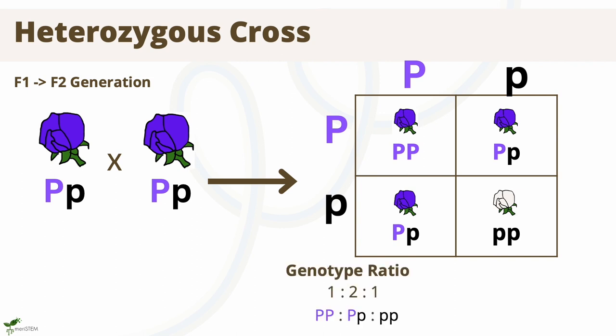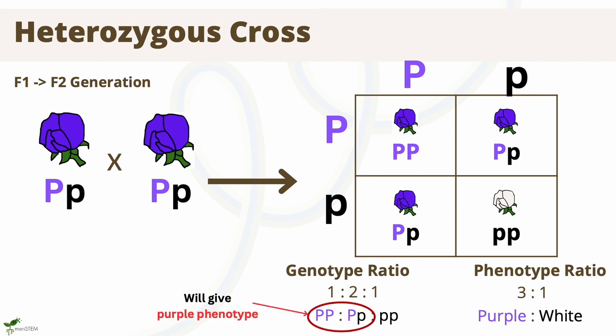In this example, the possible genotypes include 1 big P big P, 2 big P little p, and 1 little p little p, which results in a genotype ratio of 1 to 2 to 1. However, the predicted phenotype ratio is 3 to 1, which is 3 purple to 1 white. This helps explain Mendel's observation of roughly 75% purple in the second generation.